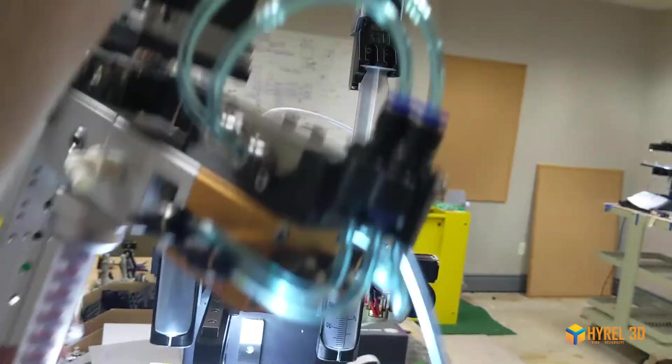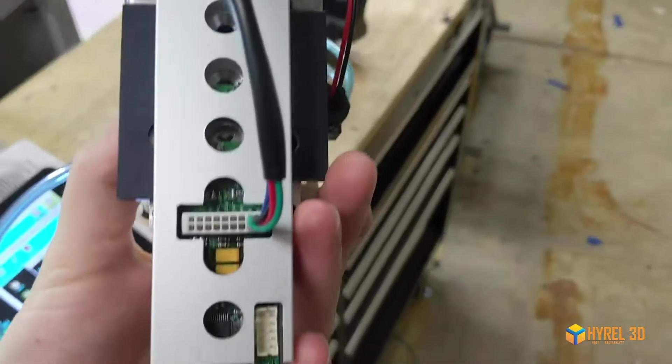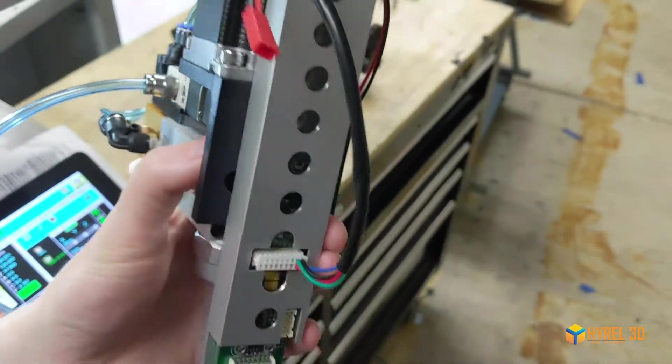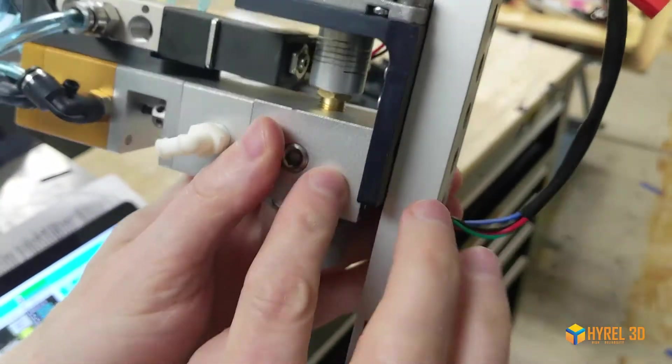To change the position up or down, remove the two circuit board screws as shown here and then adjust the main part of the DMH up or down as needed.